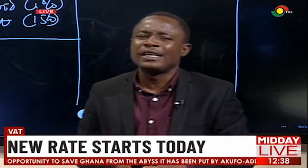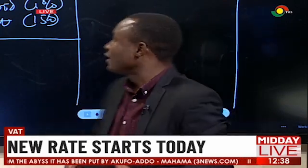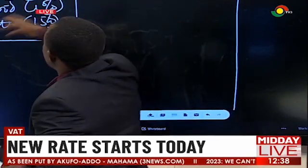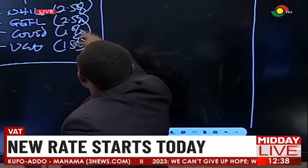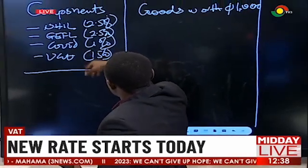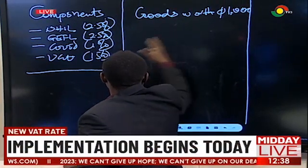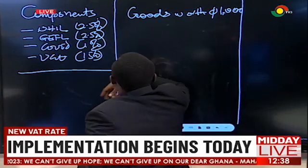So what we're essentially doing now is to see how much one would pay in all if you shop to a total of 1,000 Ghana cedis. So what you see here are just the components: 2.5% for NHIL, 2.5% for GetFund, 1% for COVID, and then the standard rate, which is 15%.